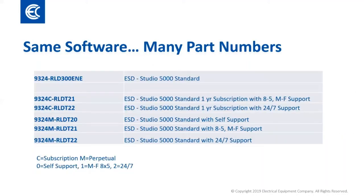Here is a comparison of the traditional Studio 5000 standard part numbers to its new options in the software portal. There is no difference in functionality between the five new part numbers — they describe whether the license will be perpetual or subscription, and outline the support level. With so many options available, it's helpful to have your options planned out before creating a quote.